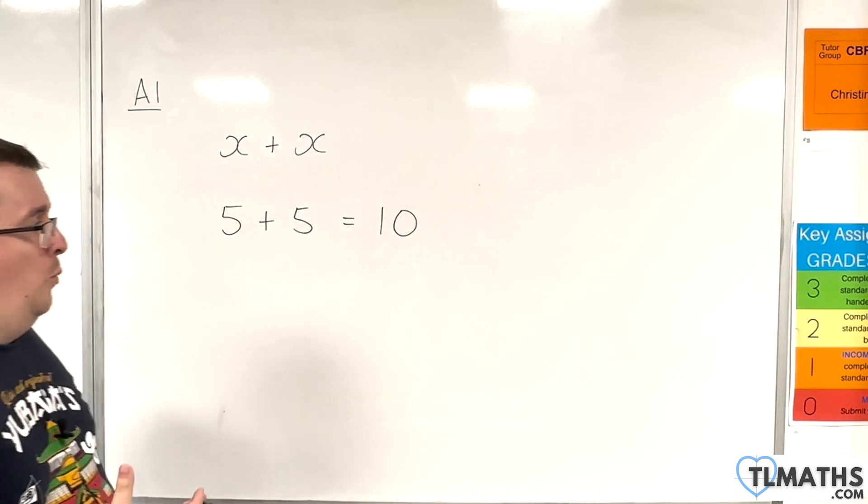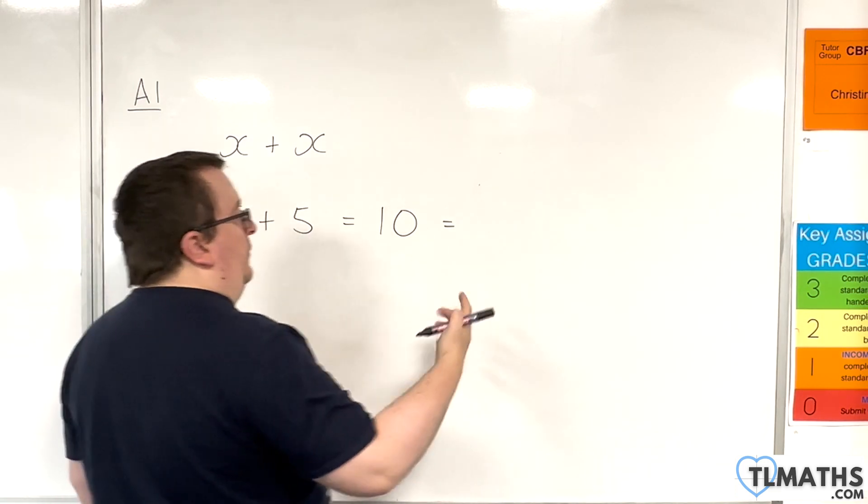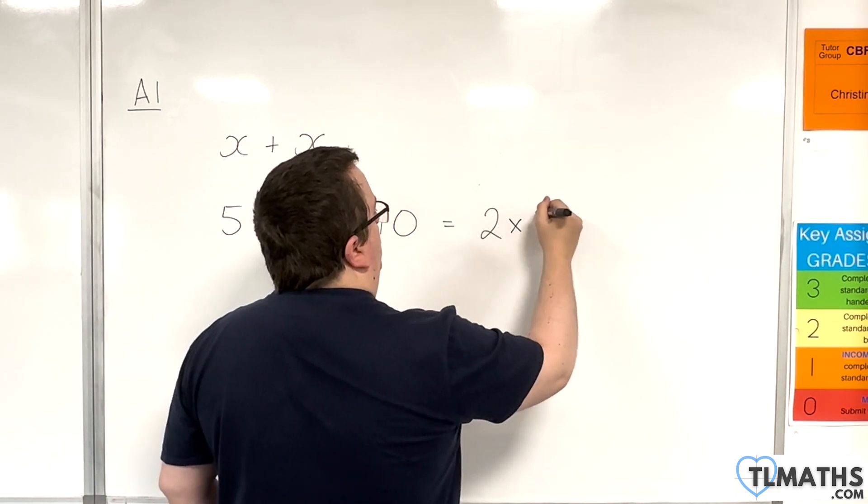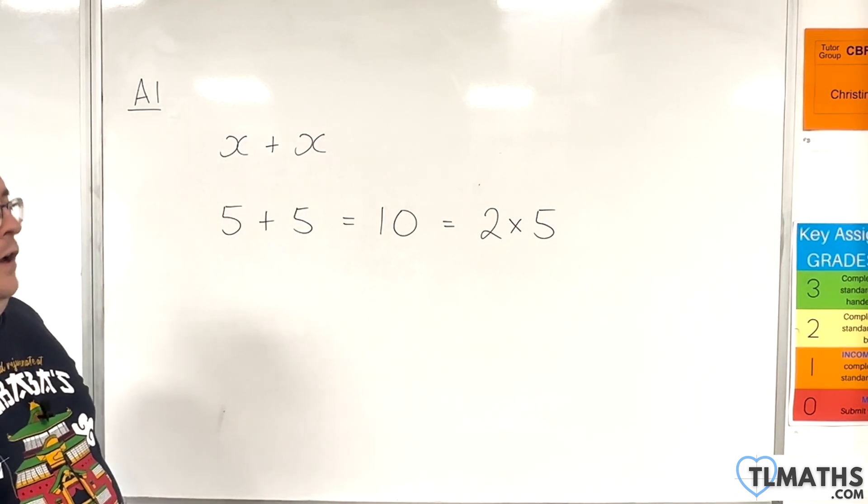Now, another way that we could write our answer is by saying, well, 10 is the same thing as 2 times 5. Okay, right, perfect.